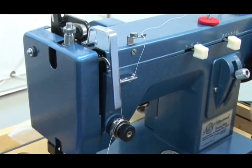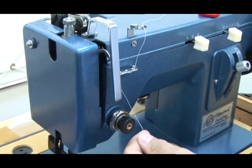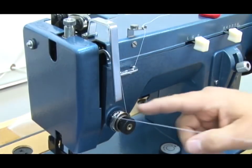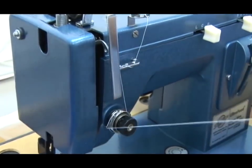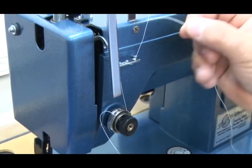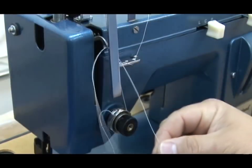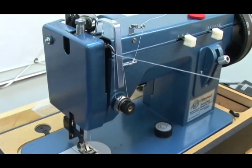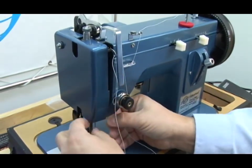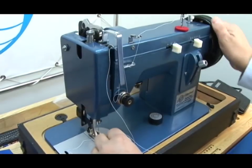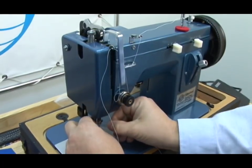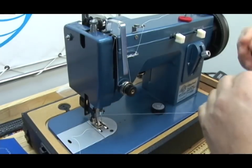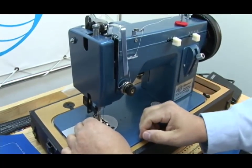But if you forget that and you drop the presser foot and go to thread the machine with the foot dropped, it's going to be very difficult to pull the thread into the core. And you may even forget that you need to pull it into the core and then continue to thread the machine the way you normally would. So what I'm doing is I'm showing you what not to do here and rotate our wheel to get down to our guide and thread the needle.